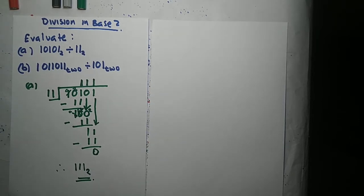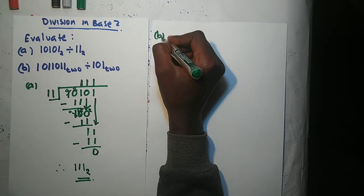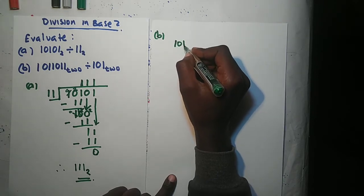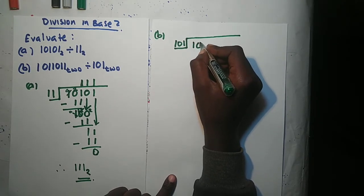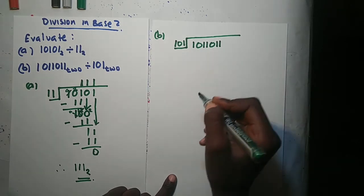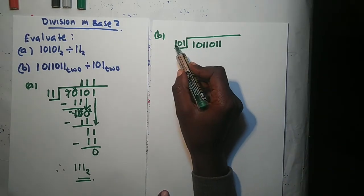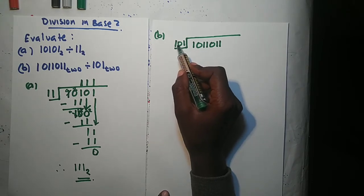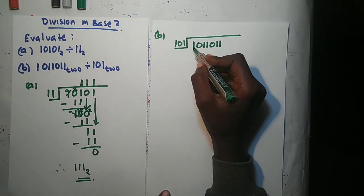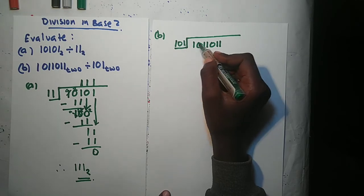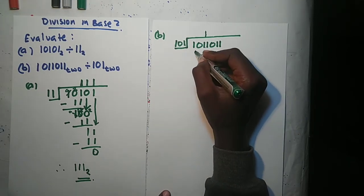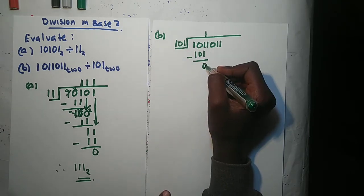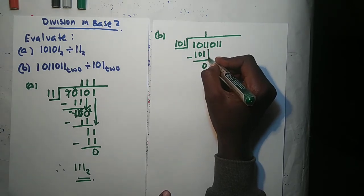That's our answer for part A. Now we go to part B. Part B says divide these two numbers using long division. We have 101 dividing into 1011011. Since the divisor has three digits, we check the first three digits of the dividend. We have 101, which equals the divisor, so 101 goes into 101 once. We multiply to get 101, subtract, and get 0. Then 101 into 0 — it can't, so we bring down the next digit.